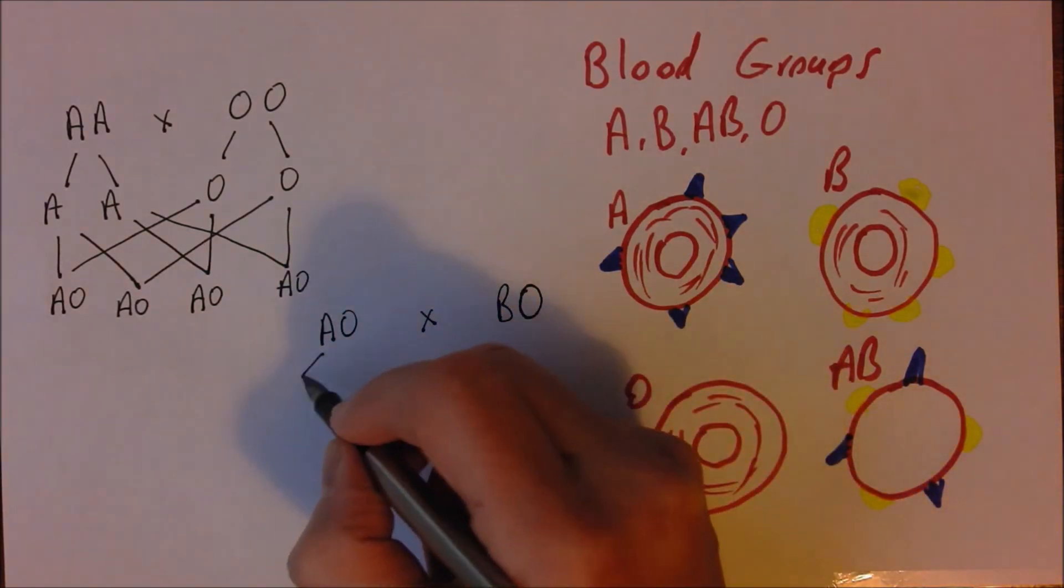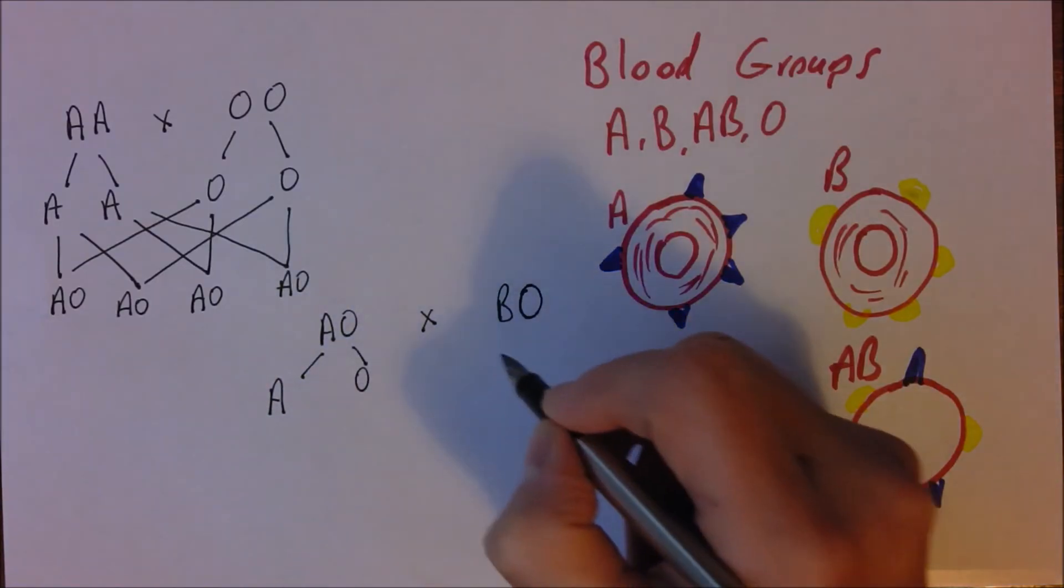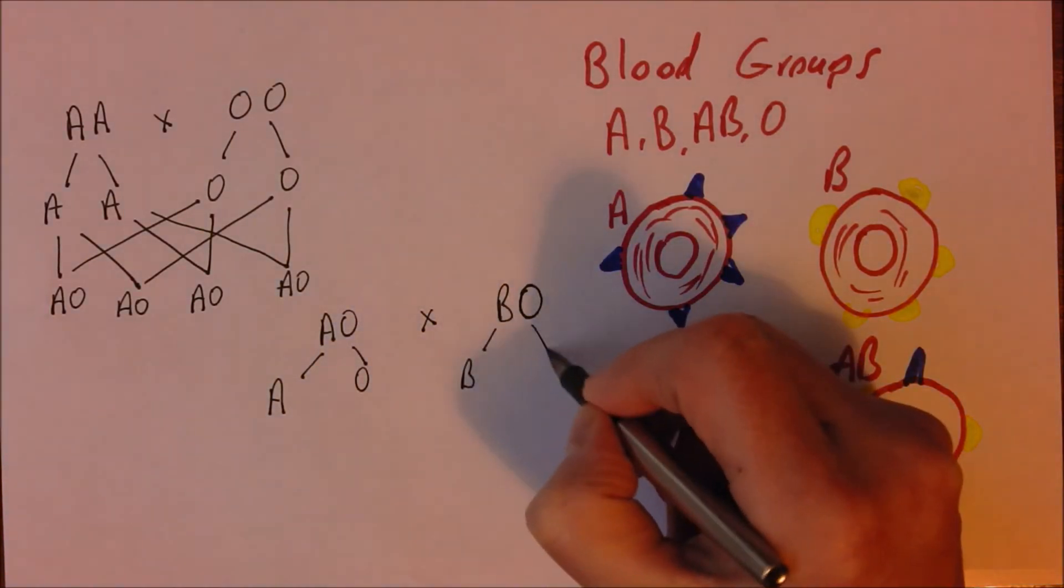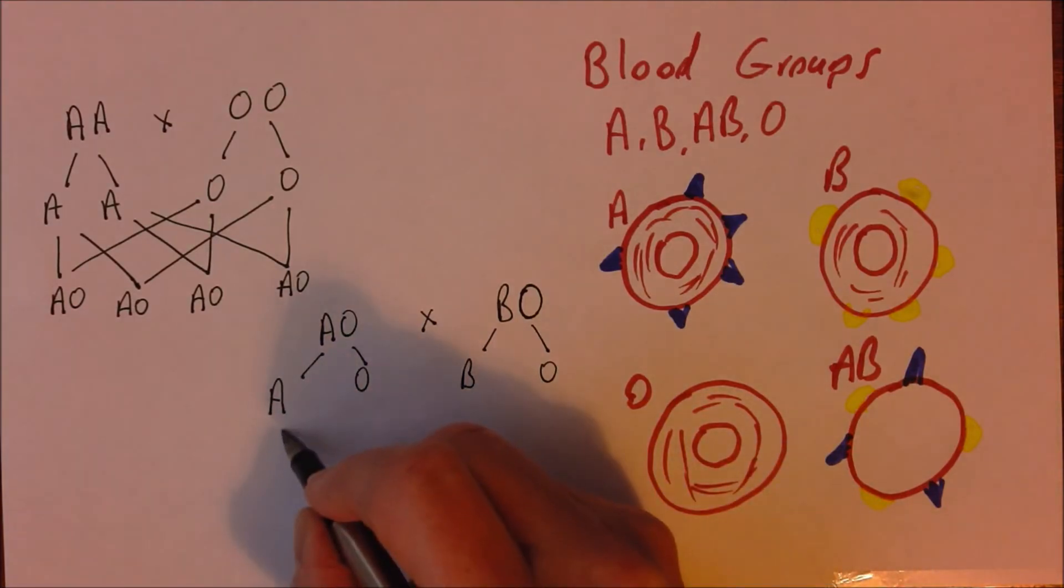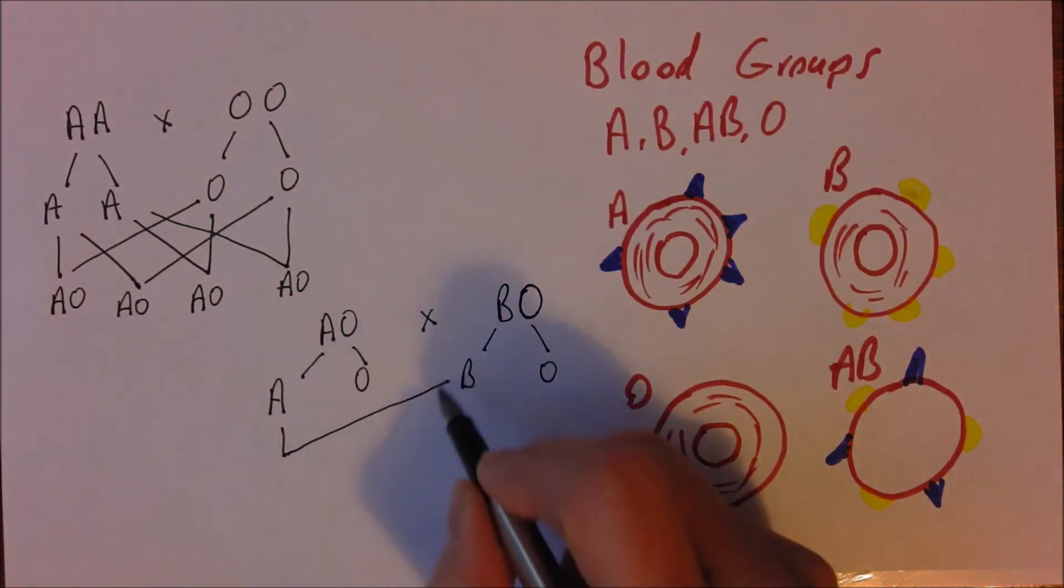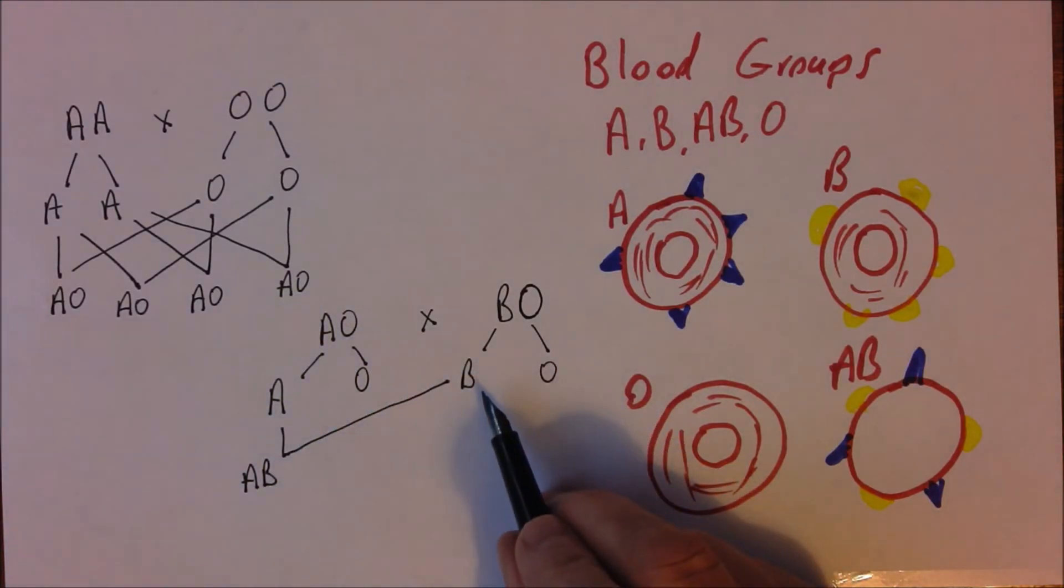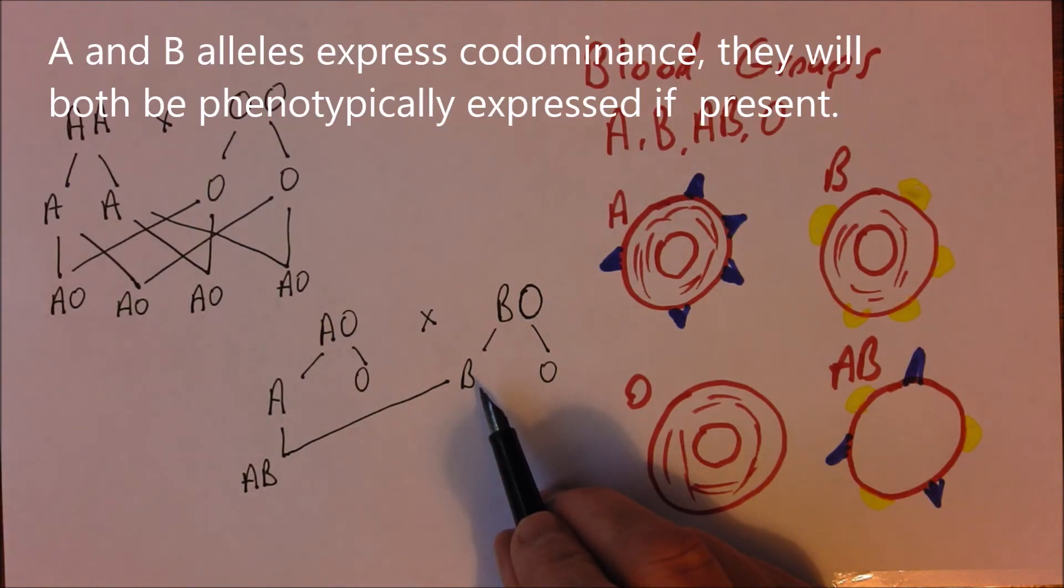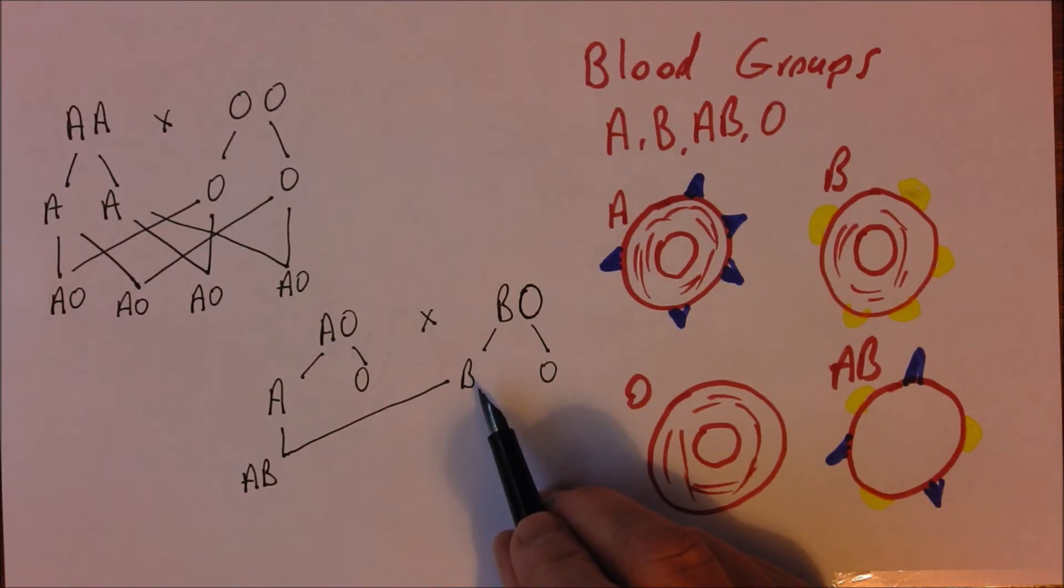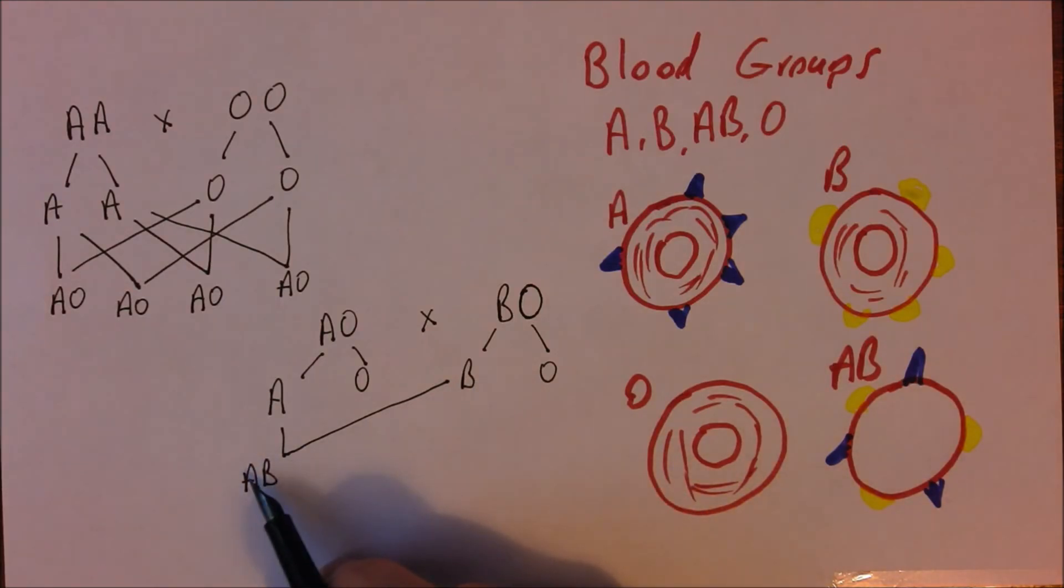So again we make the gametes. Now that could combine with that. And in that case we would get blood group AB. Because A and B are co-dominant. Both of these alleles are equally dominant. So if someone has A on one chromosome and B on another, phenotypically they will be blood group AB. So both genes co-dominant, both expressed in the phenotype.